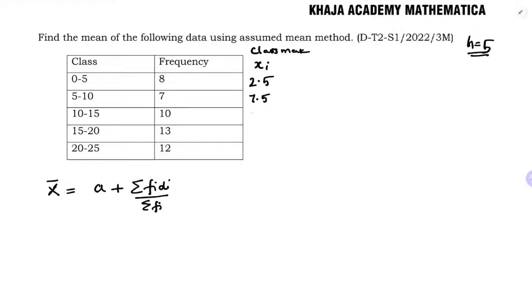You can keep on adding the value of h, so you will get 12.5, 17.5, 22.5. Now we need to find di. For assumed mean, di is xi minus a. You need to assume any one value as a. Most will take in the middle, so take 12.5. 2.5 minus 12.5 is minus 10, 7.5 minus 12.5 is minus 5.